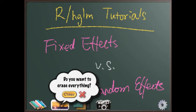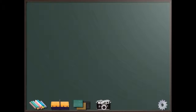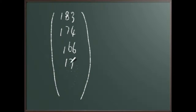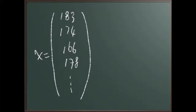So first of all, let's say we have only one covariate — a variable which is a long column vector with some values in it. Let's say this vector is a measurement of human height: the first person is 183 cm, the second is 174 cm, then 166, 178, and so on. If you have a variable x like this and you want to use it as a covariate in a model, and you only have one or very few variables, this kind of continuous-scale variable should usually be treated as fixed effects.